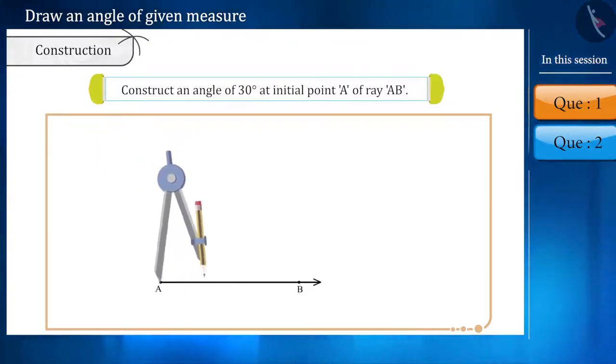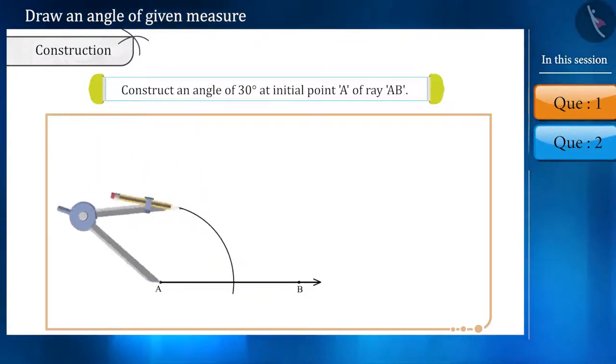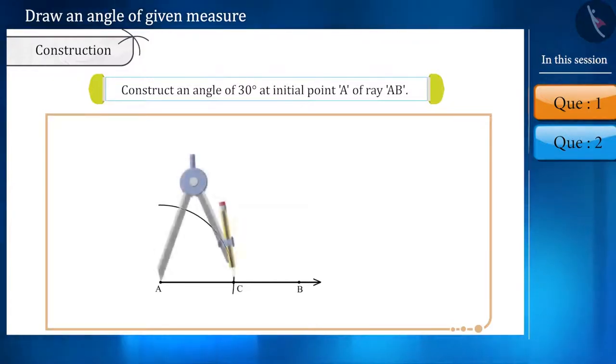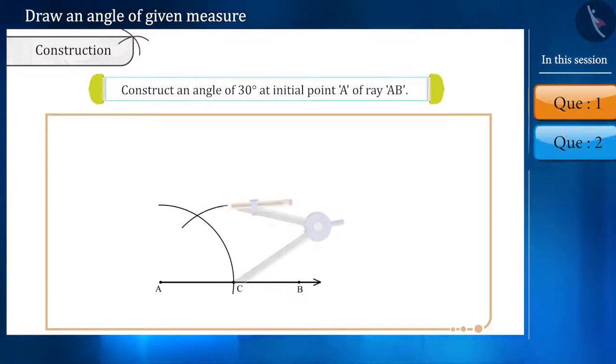Now, using a compass, draw a mark of any length like this and name the intersection point as C. Now, without changing the measurement, we will draw one more arc from point C, which will intersect the first arc at point D.